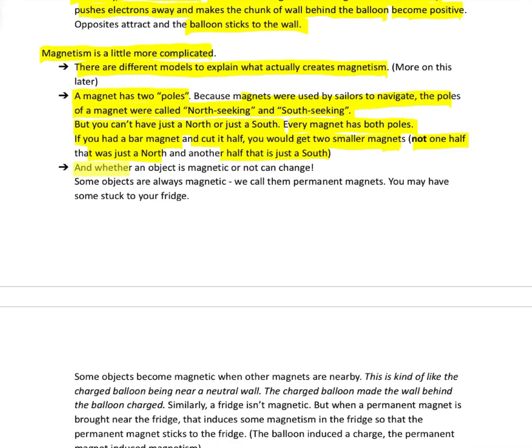Similar to electricity, just like charge can come and go, objects can be magnetic or non-magnetic and change between the two. Some objects are always magnetic. We gave them the clever name of permanent magnets. That's like the things that are stuck to your fridge.